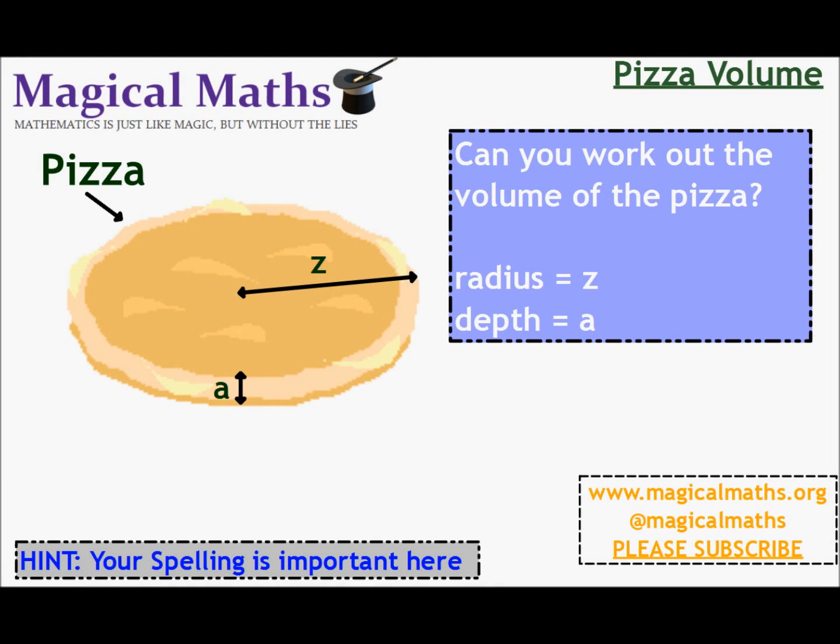Here's another magical maths bite-sized starter on volume. This is a pizza with radius Z and depth A. Can you work out the volume of the pizza?